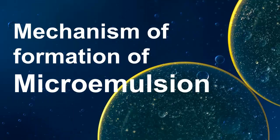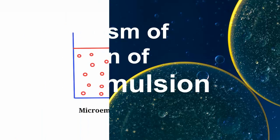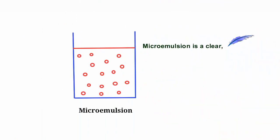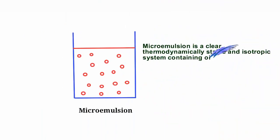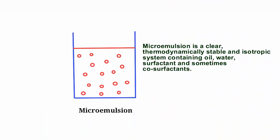Mechanism of Formation of Microemulsion. Microemulsion is a clear, thermodynamically stable and isotropic system containing oil, water, surfactant, and sometimes co-surfactants.